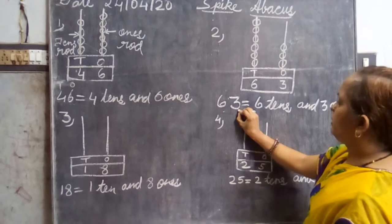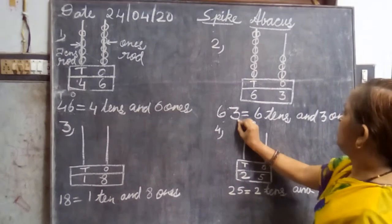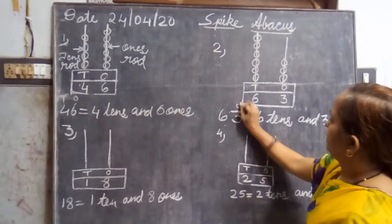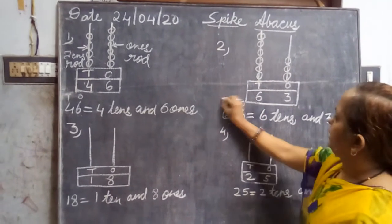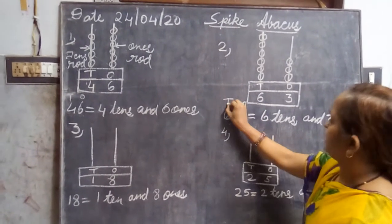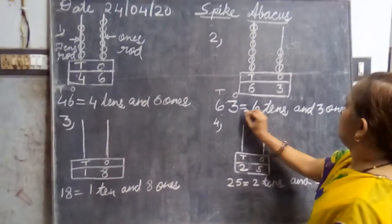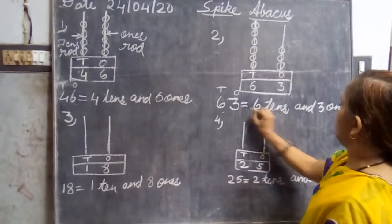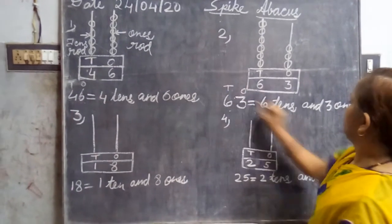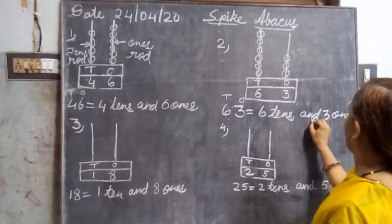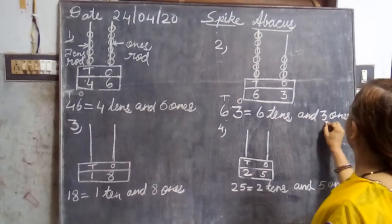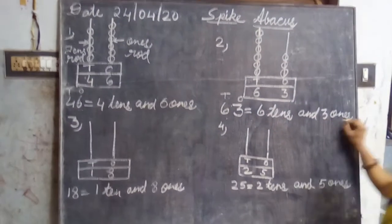How will we write this number? Ones and tens. Just check it. Six tens and three ones.